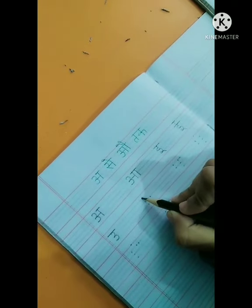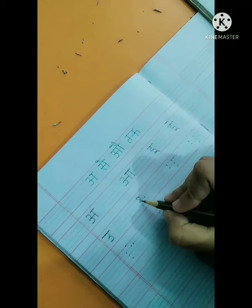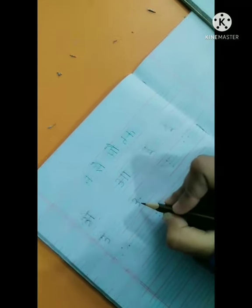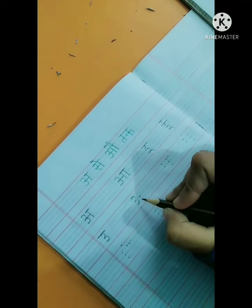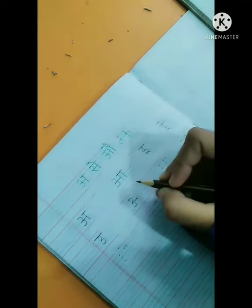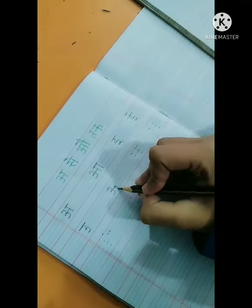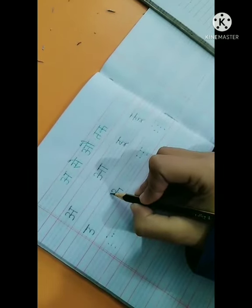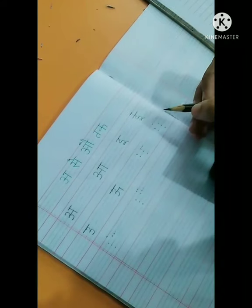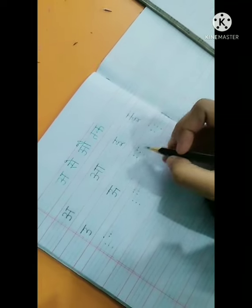Now we will make bada u. Make a curve from the first dot to the second dot, then another curve from the second dot to the third dot. Now make a sleeping line in between, a standing line, and a sleeping line on the top. This is bada u — bada u se u.